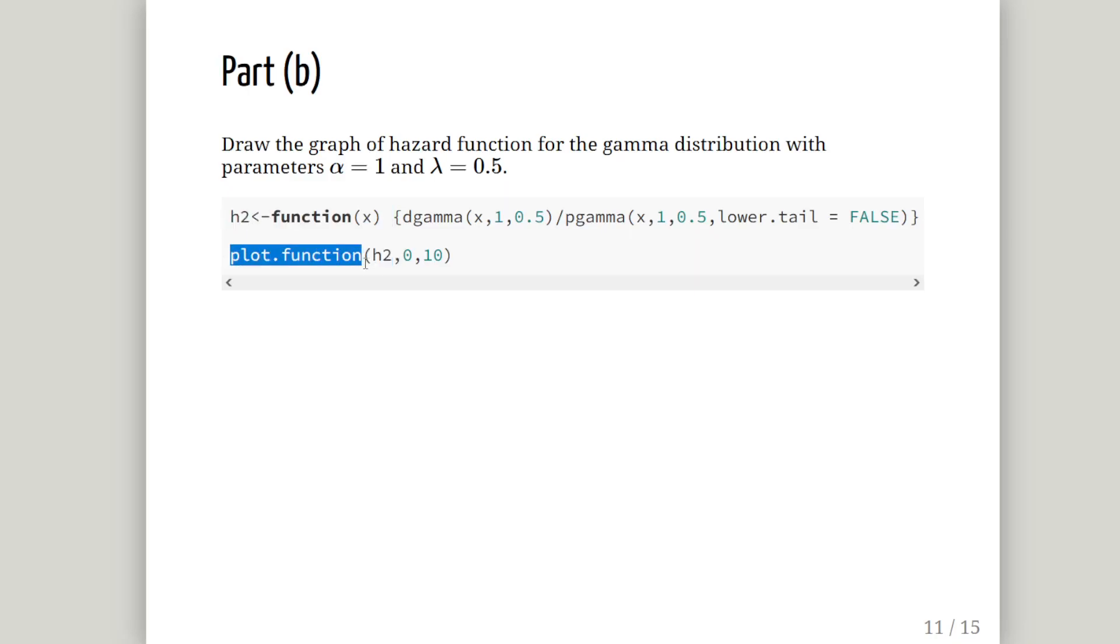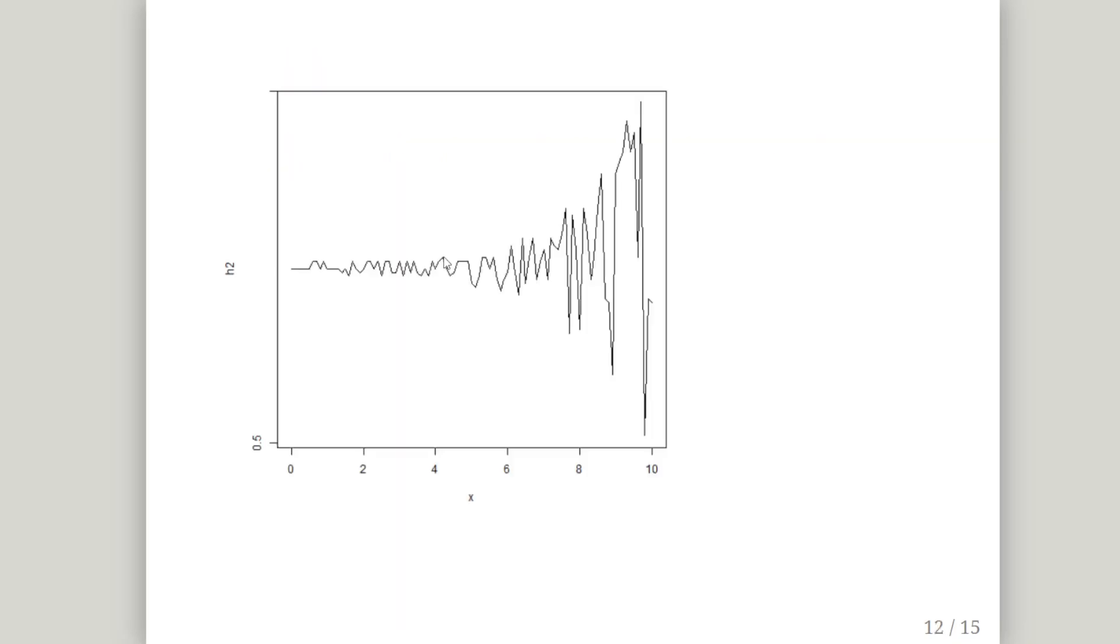Then we're going to plot it. Plot that function h2, again from 0 to 10. Now it's a little bit unusual looking, a bit random, but that's what it's supposed to look like. We've done nothing wrong. I've checked the solutions and that's what it should look like. It's a bit of a strange one, but we'll just go with it.